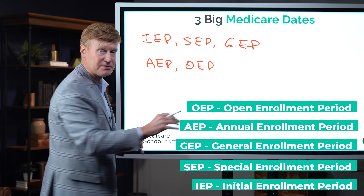If you do not receive your Annual Notice of Change by October 1st, take out your insurance card — whether that's the Advantage card or your prescription drug card — find the customer service number, and call them to let them know. Just because you didn't receive it does not mean you're exempt from responsibility for what's contained in that packet. Make sure you have your ANOC in hand.